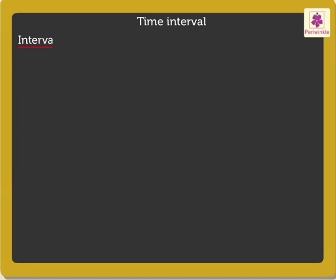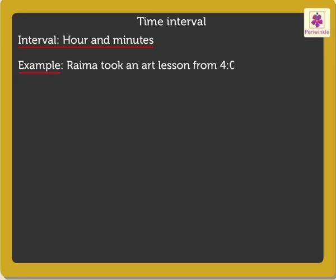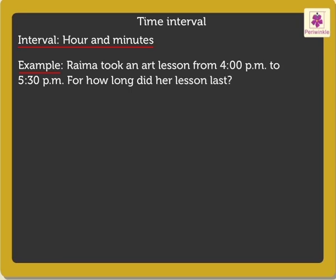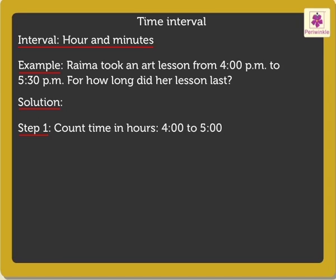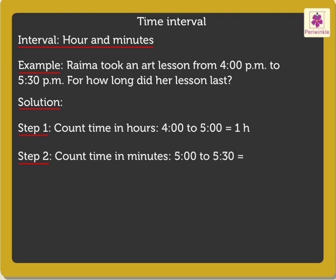Now let us learn about interval of hours and minutes. To understand it in a better way, let us solve an example. Rehma took an art lesson from 4pm to 5:30pm. For how long did her lesson last? We shall follow two easy steps to get the answer. Step 1: Count time in hours — we know that 4pm to 5pm gives 1 hour. Step 2: Count time in minutes — on counting the minutes from 5pm to the ending time 5:30pm, we get 30 minutes. So here from steps 1 and 2, we get the total time as 1 hour 30 minutes.